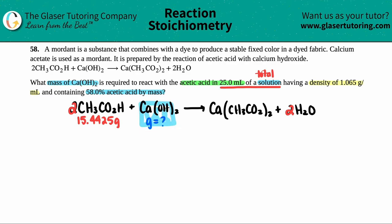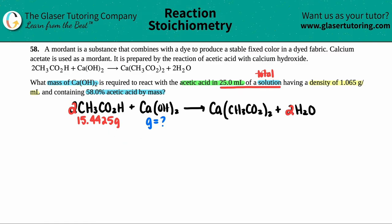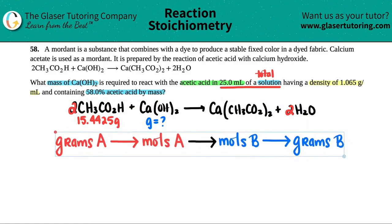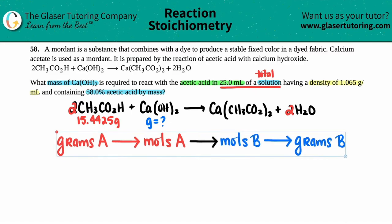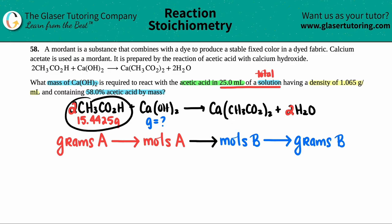Now we have a mass of acetic acid and need to go to another compound in a balanced equation — that's the stoichiometry part. If you have information on one compound and need to go to another via a balanced equation, you use ratios. The overall flow diagram is: grams to moles to moles to grams, where the starting compound is in red and the target compound is in blue.